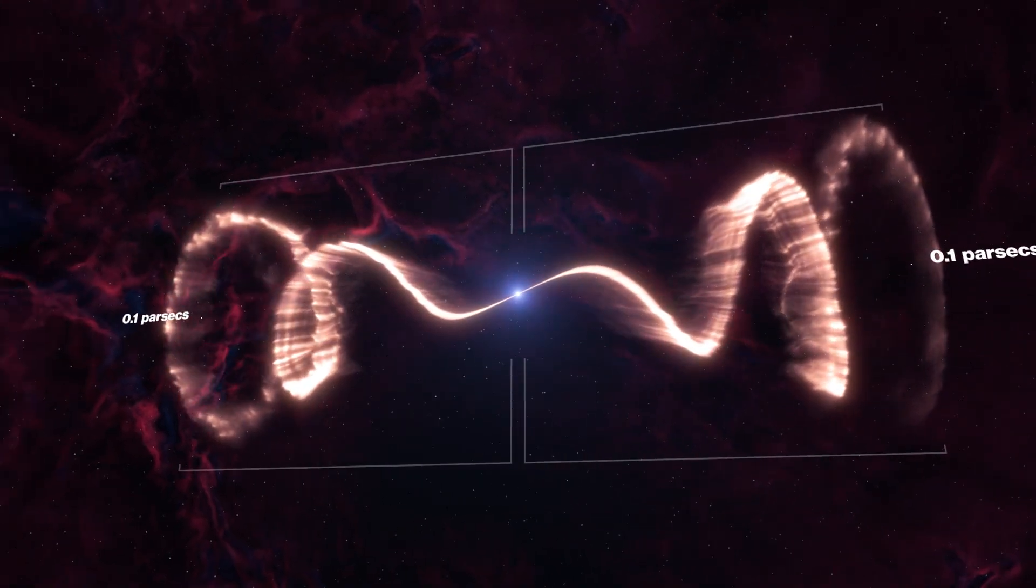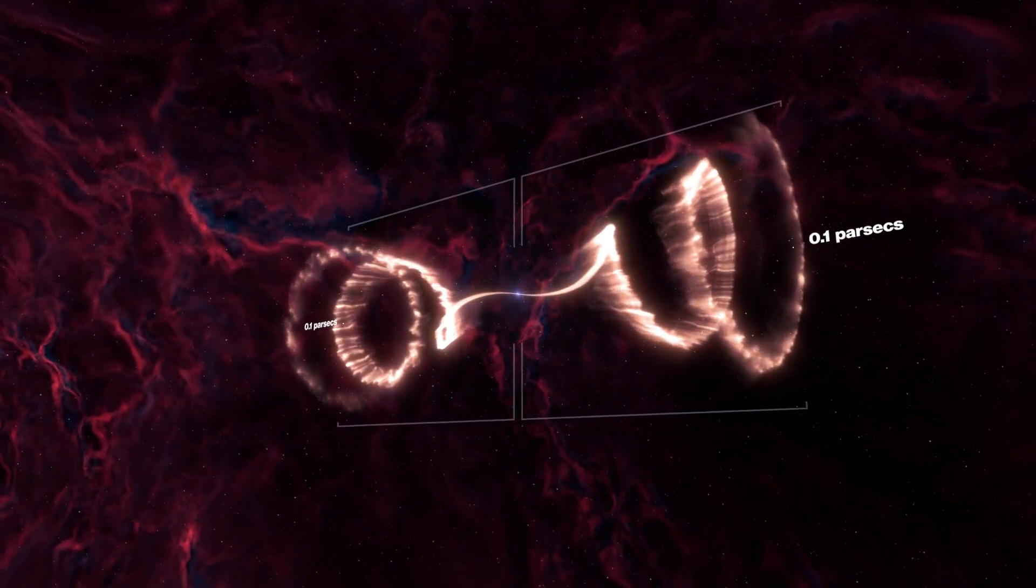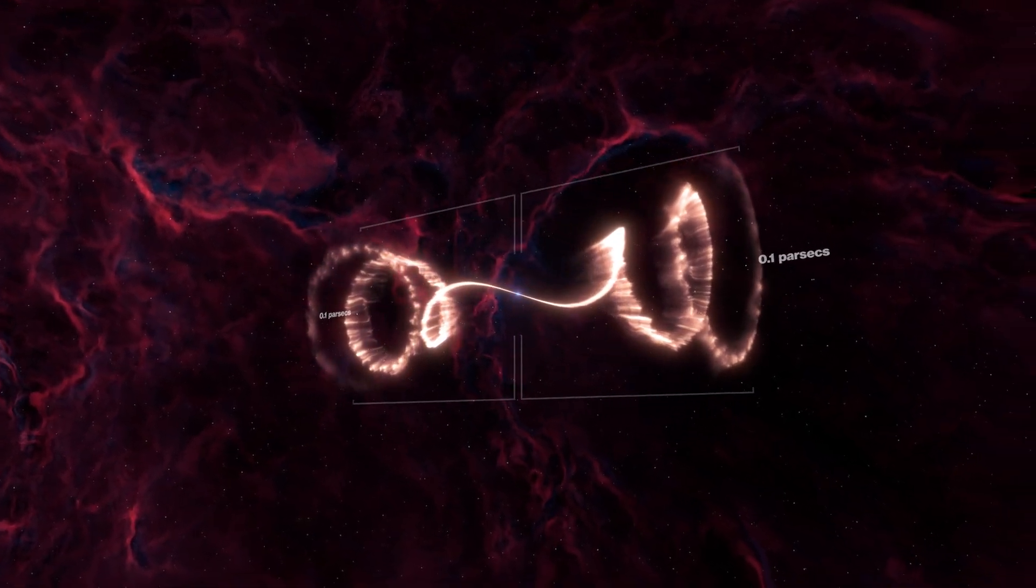As matter accretes onto the black hole, precessing jets containing this material burst out into space.